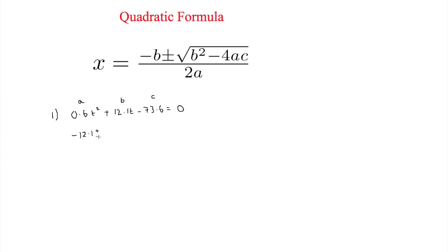Plus or minus, then 12.1 squared. Obviously this will be in a calculator, so no need to know this off the top of your head. Minus 4 times 0.6 times negative 73.6. This is all over 2a, which is 2 times 0.6, which equals 1.2.